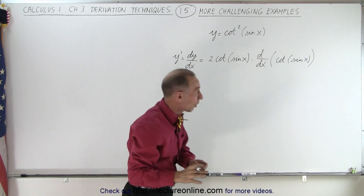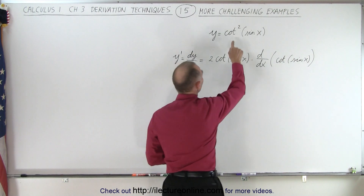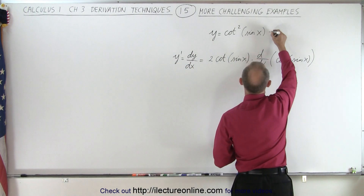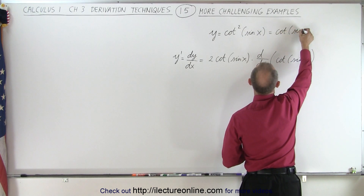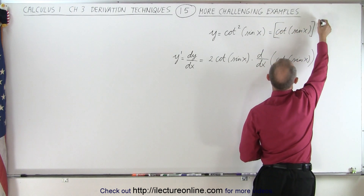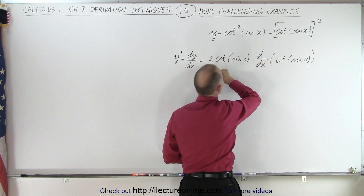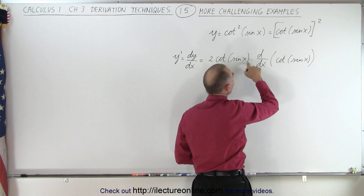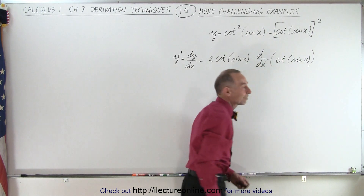It's kind of hard to keep track of what we're doing, so think of it as: we have the cotangent squared of the sine of x. There's another way to write that — we could write it as the cotangent of the sine of x, with the whole thing raised to the second power. Now it's easy to see that we have two times the cotangent of the sine of x to the first power, times the derivative of what's inside, which is the cotangent of the sine of x.